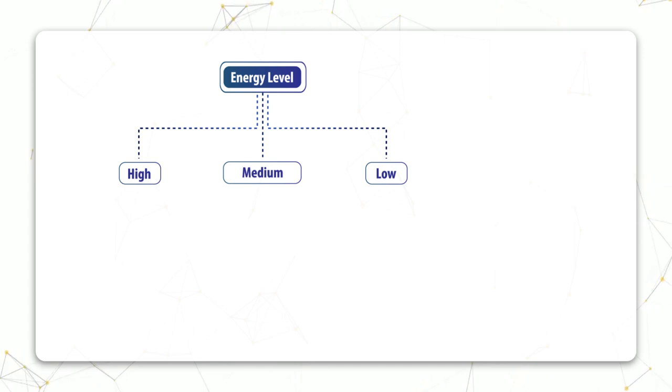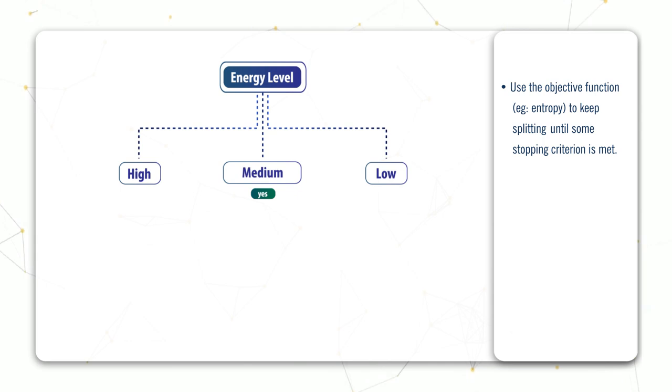In the last video we saw how to construct a decision tree classifier. The idea is to choose a feature, split on that feature, split again at each of the new nodes, and keep repeating this all the way down until reaching some sort of stopping condition.